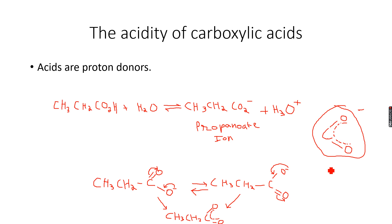It has donated an H⁺ ion and it is difficult for it to accept an H⁺ ion back, which is a typical property of an acid. So it is behaving like an acid, and this is what makes carboxylic acids acids — this is what gives them their acidity. The stabilized structure does not easily accept an H⁺ ion, which is how a carboxylic acid works.